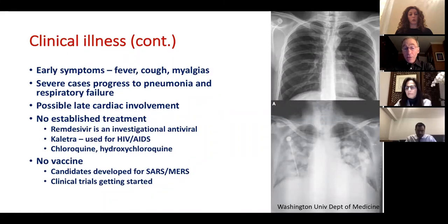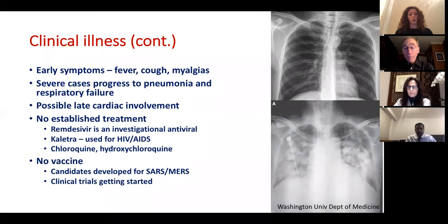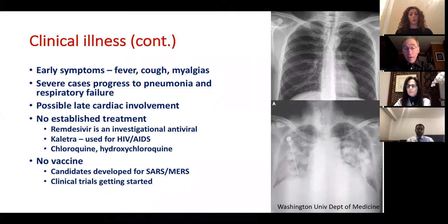We do not have a vaccine for this disease. Candidates were developed from work on SARS and MERS vaccines, and the first candidate has already begun a clinical trial. But as Anthony Fauci from the NIH has emphasized, under the best scenario, it will be 12 to 18 months before a vaccine can be determined — to the FDA's satisfaction — to be safe, effective, and producible in large enough amounts for distribution. So we have to go through this season without a vaccine.